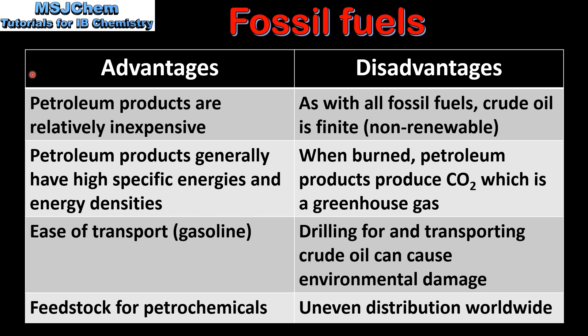Next we look at the advantages and disadvantages of petroleum. Starting with the advantages: petroleum products are relatively inexpensive, they generally have high specific energies and energy densities, the next advantage is ease of transport in the case of gasoline, and they are used as feedstock for petrochemicals.